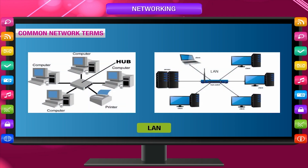Common network terms. LAN: It is a local area network that connects computers within a small geographic area such as an office or a school. The computers kept in a room or a building are usually connected with cables or wires.